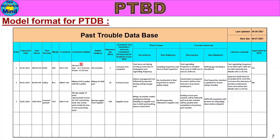The format also includes root cause analysis. There are two types of root causes: occurrence root cause and non-detection root cause. Based on these, two corrective actions — countermeasures — are mentioned in the database.